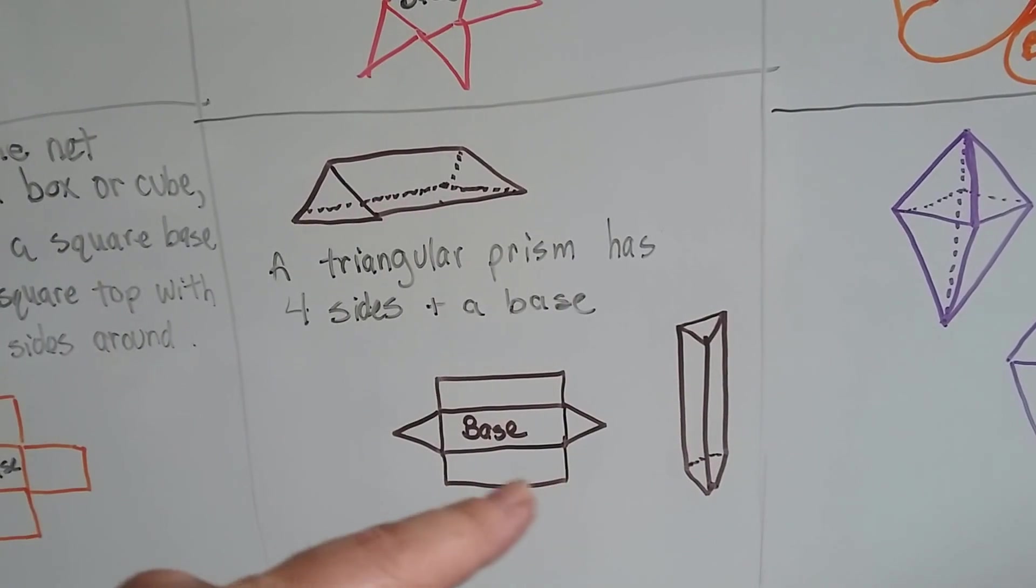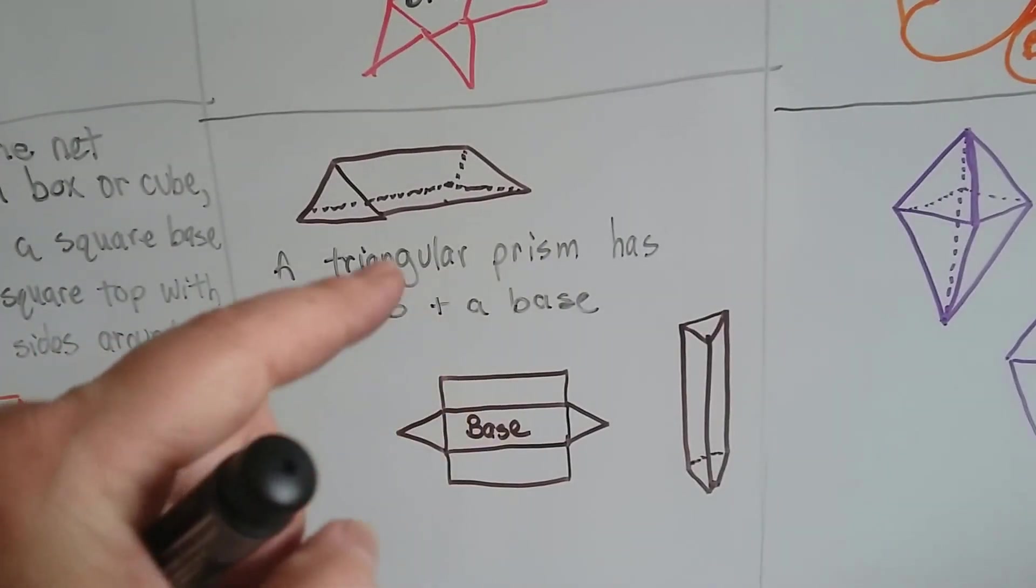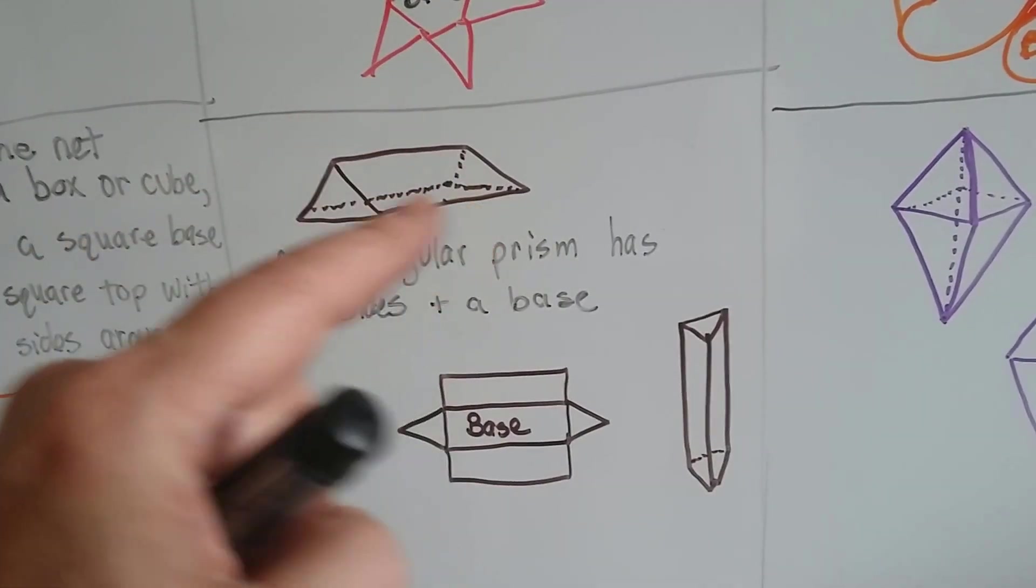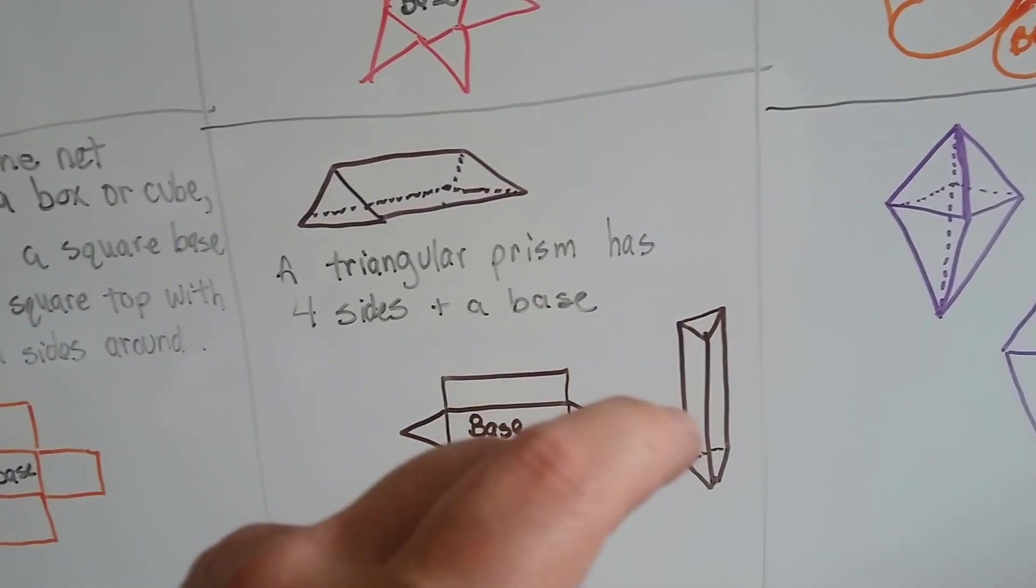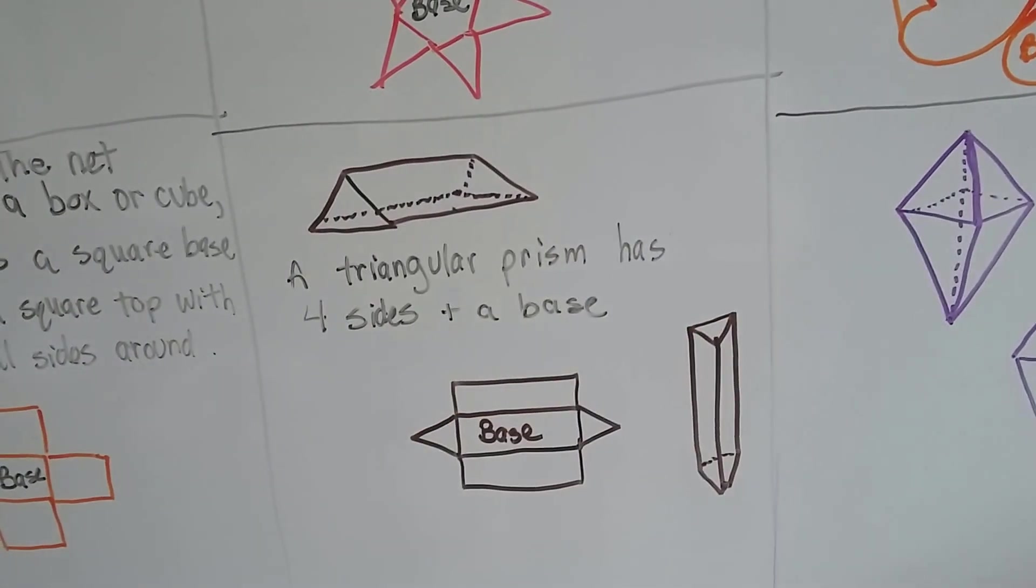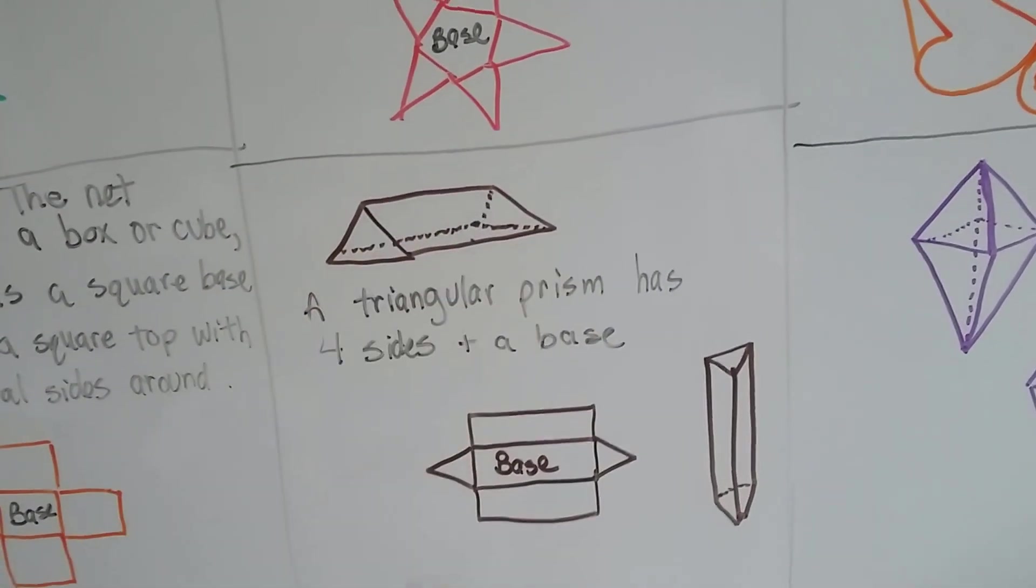And this top line would meet that bottom line, and they'd make a triangle shape like that. And if we stood it on end, then this would be the base one and base two, and it would have three rectangles for lateral faces. It just depends on how it's sitting.